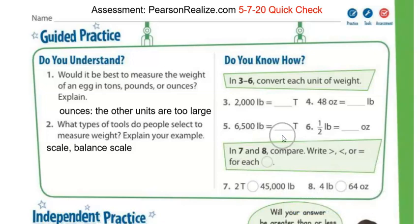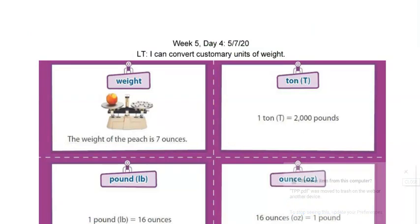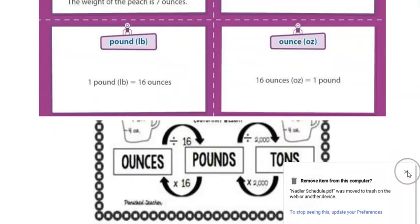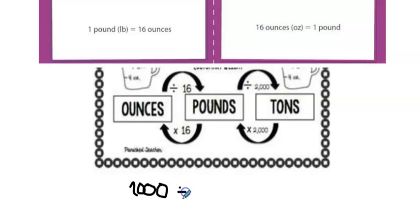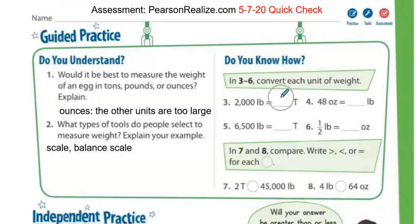On number three, we are going to be using that conversion chart to help us solve. So it says 2000 pounds equals how many tons? So let's take a look at our chart. 2000 pounds is how many tons? So we're going to be looking at this pound section. So if I have 2000 pounds, we want to know how many tons that is. So we're going from pounds to tons. So we're going to divide that because we're going from here to here. So we're going to divide by 2000. So if we're looking at this, we know that one ton is the same as 2000 pounds. So if I take 2000 pounds and divide it by 2000, it's going to give me one ton. So my answer for number three is going to be one.